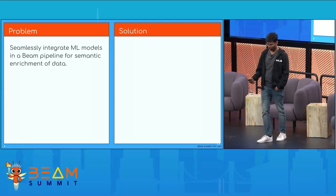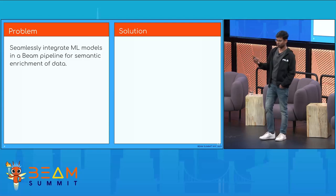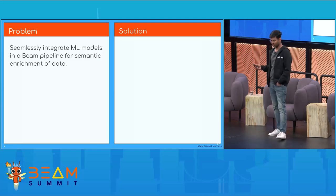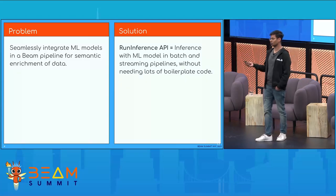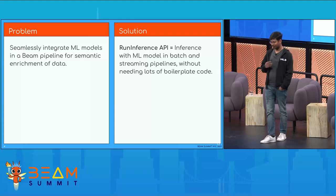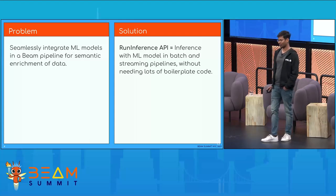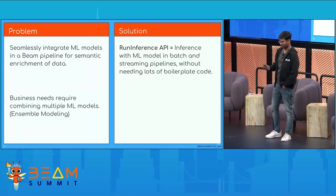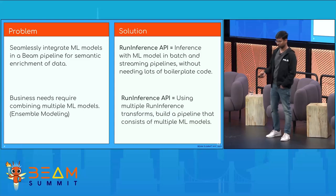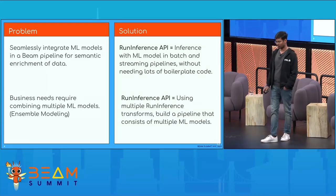Now that you're convinced you want to use machine learning in a Beam pipeline and want a really easy experience, you should use the RunInference API. It's quite easy to use, supports both streaming and batch pipelines, and you don't have to worry about writing boilerplate code. And because you want to use multiple machine learning models, just use multiple RunInference transforms and your problem is solved.